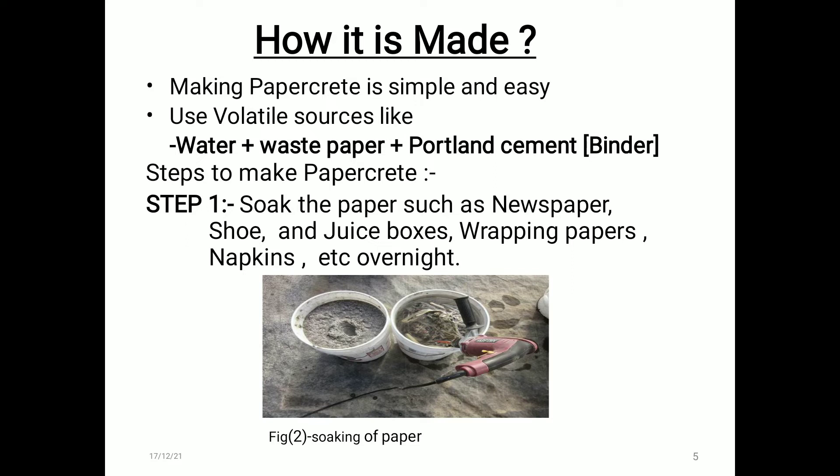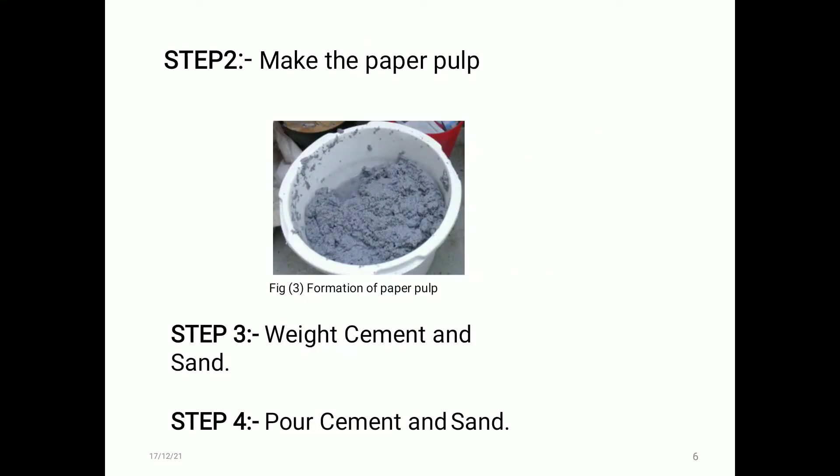Steps to make Papercrete. First step: soak the paper — such as newspaper, soup boxes, juice boxes, wrapping papers, napkins, etc. — overnight. This figure represents the soaking of paper.